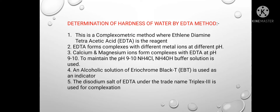Now we will see determination of hardness of water by the EDTA method. This is a complexometric method where ethylenediamine tetraacetic acid (EDTA) is the reagent. EDTA forms complexes with different metal ions at different pH values. Calcium and magnesium ions form complexes with EDTA at pH 9 to 10. To maintain this pH, NH₄Cl–NH₄OH buffer solution is used. An alcoholic solution of Eriochrome Black T is used as an indicator.